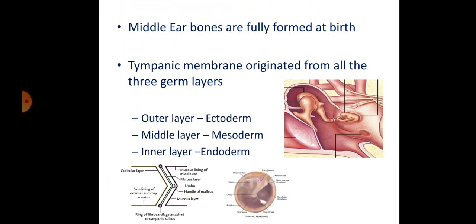The middle ear bones are fully formed at birth, meaning the size of the ear bones at birth is equal to the size of adult bones. The tympanic membrane is special in that it originates from all three embryological germ layers — endoderm, ectoderm, and mesoderm. These germ layers give rise to the organs, and the tympanic membrane has three layers.